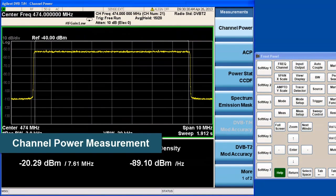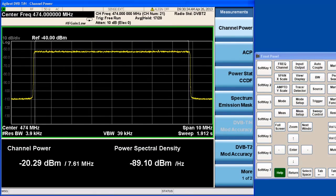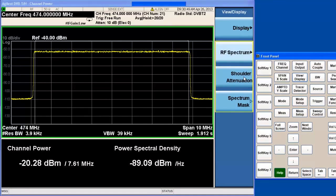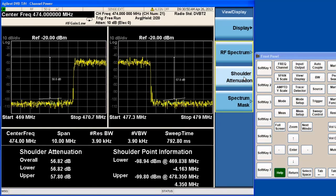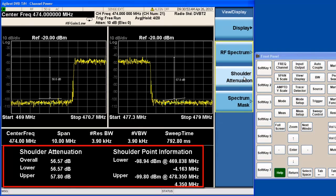First, let's see the channel power measurement. Here we can see the spectrum and channel power measurement results, which are aligned with the signal setup on the MXG. Channel power is about minus 20 dBm. We can also measure the shoulder attenuation with this measurement. The shoulder attenuation and shoulder point information are shown on the screen.